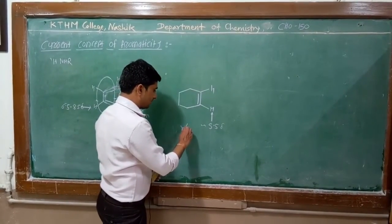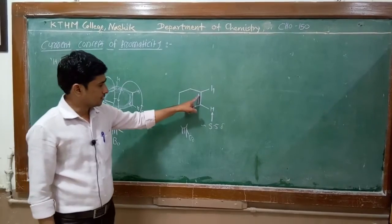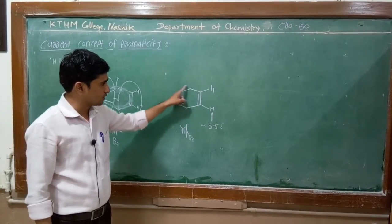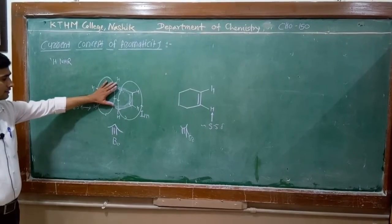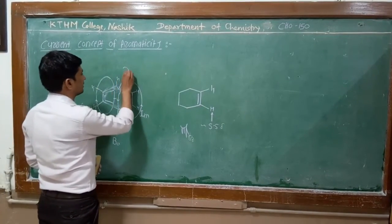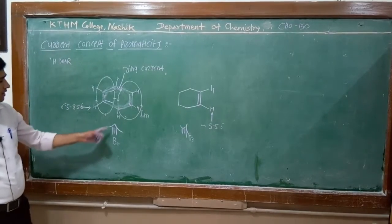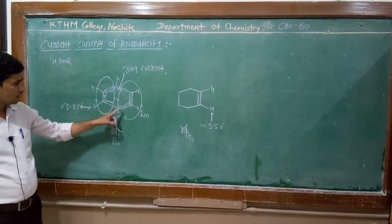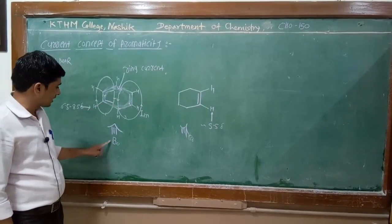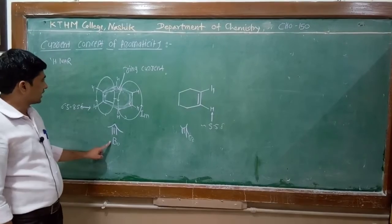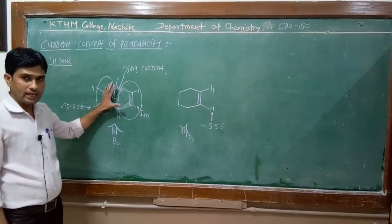If we apply an external magnetic field to cyclohexene, there is no formation of ring current because the pi electrons are not in conjugation. Therefore we can say that if any compound is aromatic, there is formation of ring current. Due to this ring current there is formation of an induced magnetic field, and somewhere this induced magnetic field is parallel to the applied magnetic field and somewhere it opposes it. The application of this ring current is in H1 NMR, and from the H1 NMR value we can determine whether this compound is aromatic or not.